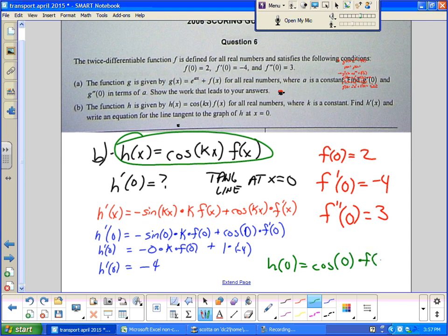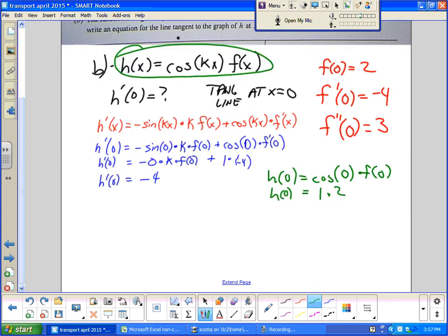h of zero equals cosine zero times f of zero. Cosine of zero is one. f of zero from our table is two. So h of zero is two. Alright. Here's our point. Here's our slope, m equals negative four. Point slope form: y minus two equals negative four times x minus zero.